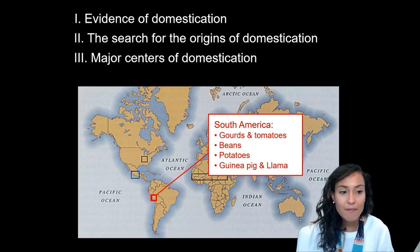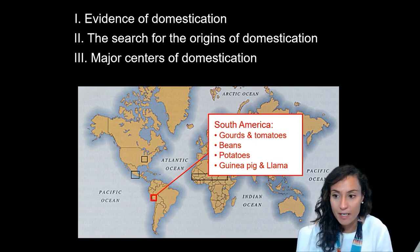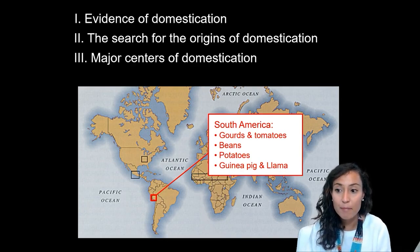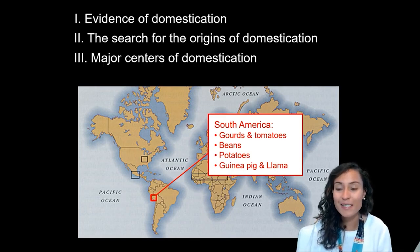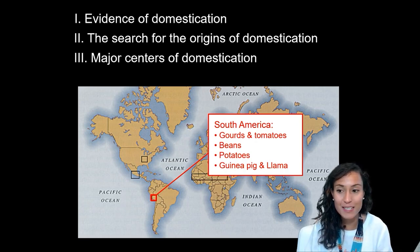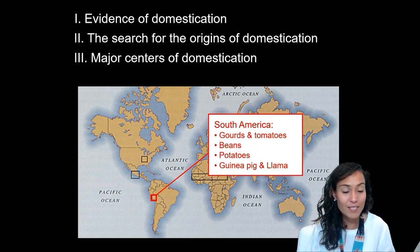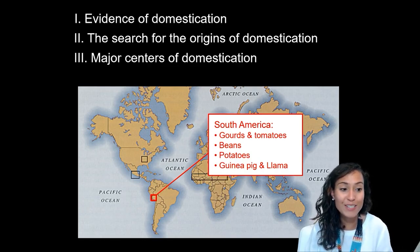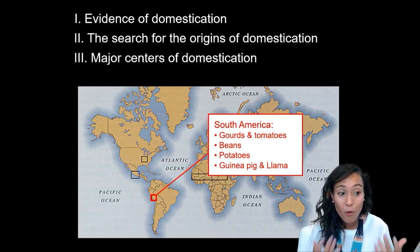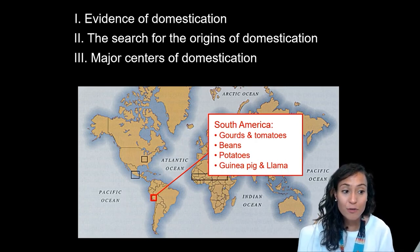Finally, we have evidence for domestication in South America, where we see things like beans, potatoes, gourds, and tomatoes, as well as guinea pigs and llamas being domesticated. What's really amazing about this domestication process in South America in particular is that you see the early cultivation of things like tomatoes, which we often associate with European foods like Italian food. But these are products that only grow originally in South America and were introduced into European diets after the 16th century.